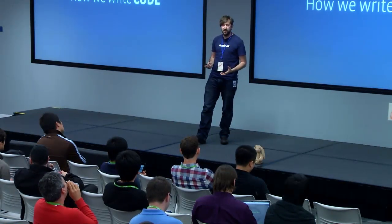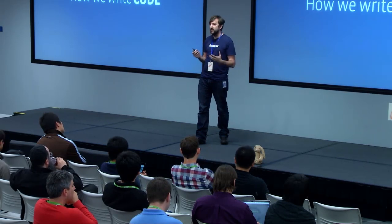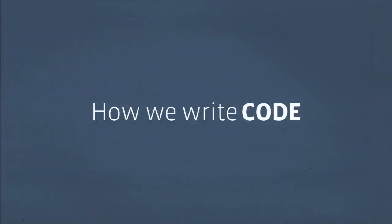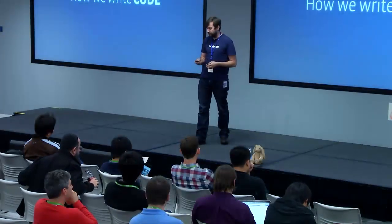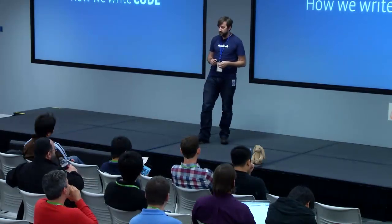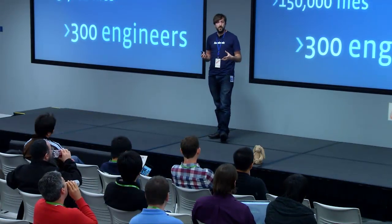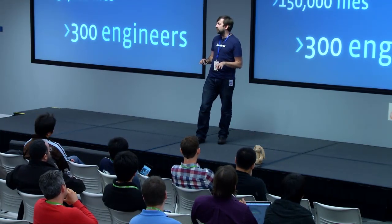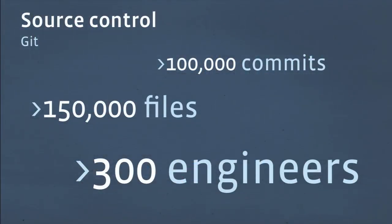Where does open source come into this? How do we write code? What tools do we use? The very first thing you want to do after writing a line of code is to make sure you never lose it — it's suboptimal to lose code. On mobile, we use Git. Within our Git repos, there are north of 100,000 commits, and we've got well over 150,000 files.